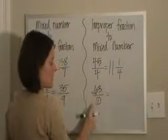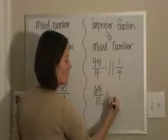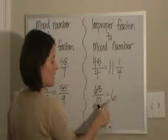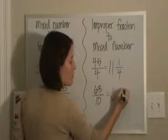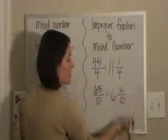Sixty-three tenths. Sixty-three divided by ten would be six. Ten times six is sixty, leaving me three tenths left over.